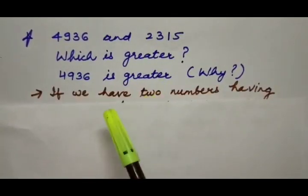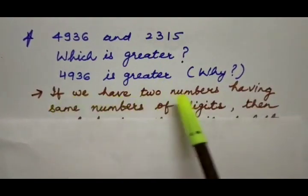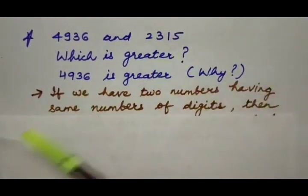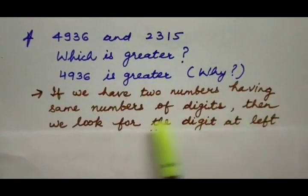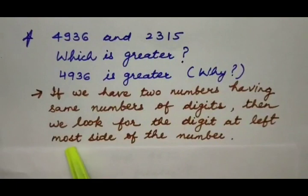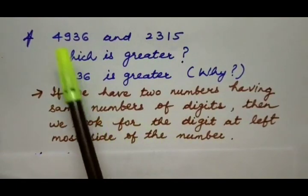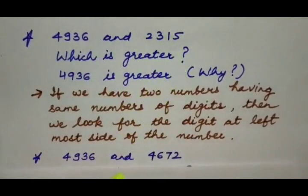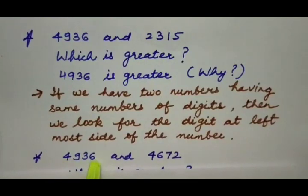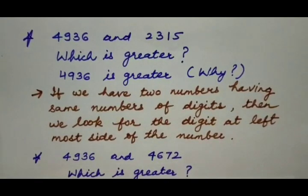So we have another rule: if two numbers have the same number of digits, then we look at the digit at the leftmost side of the number. One more example: 4936 and 4672. The question is which is greater?